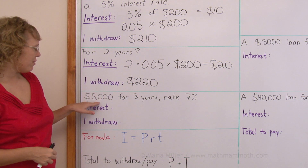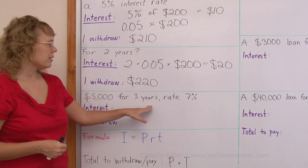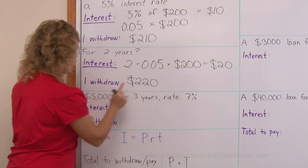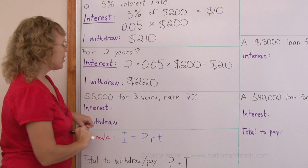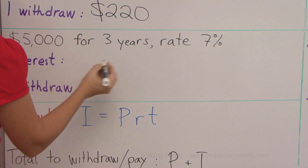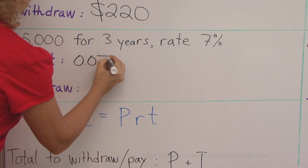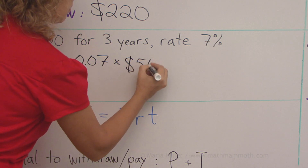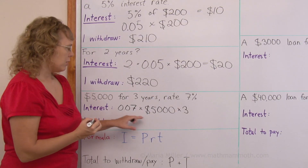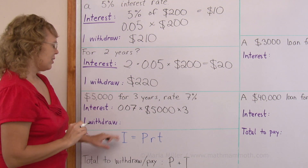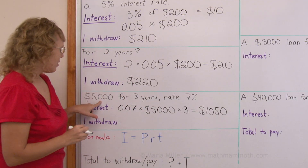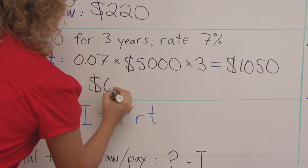In this example, we have $5,000 being invested for three years, and the interest rate is 7%. Basically, what I need to do is calculate 7% of $5,000 — that's the interest for one year — and then multiply that times three. Let me write that using decimals: 7% of $5,000 times three. Using a calculator, you should get $1,050. Then I will withdraw the principal plus the interest, so after three years I get out $6,050.